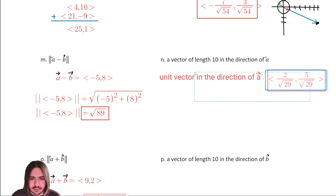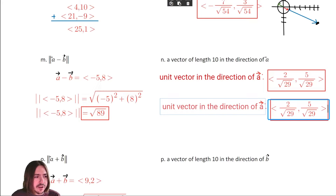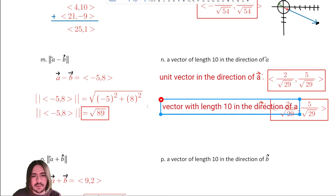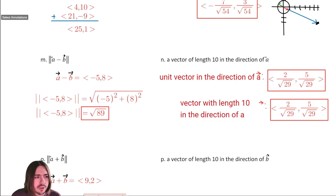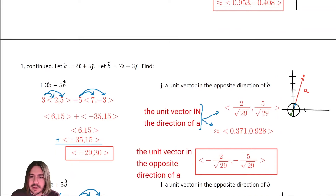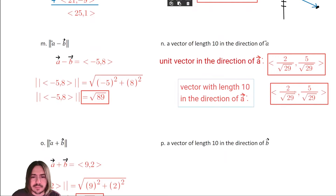Basically we're taking the unit vector and scaling it out to be ten times as long. Multiplying each component of the unit vector by ten: ten times two over root twenty-nine, and ten times five over root twenty-nine. That simplifies to twenty over root twenty-nine comma fifty over root twenty-nine. That's your answer — you can plug it into the calculator for a rounded answer.